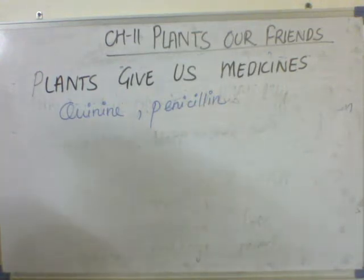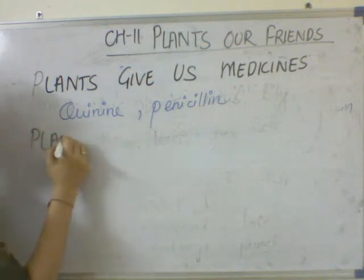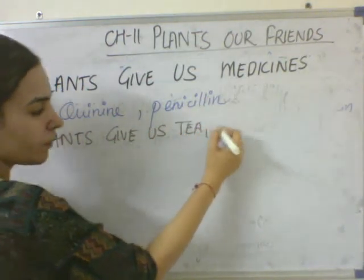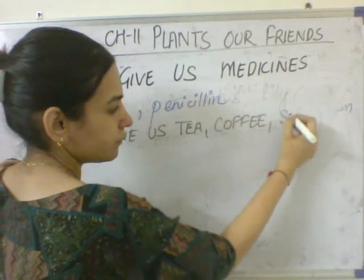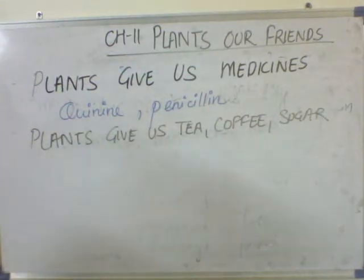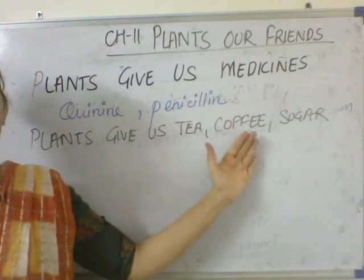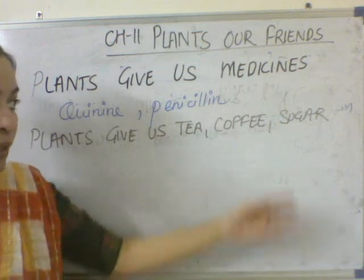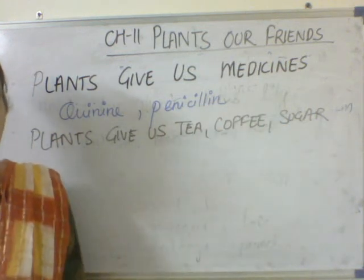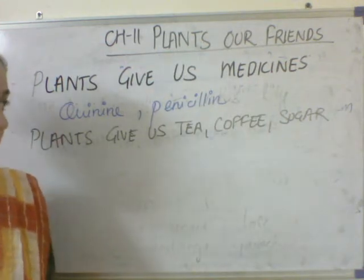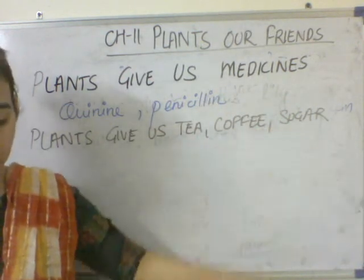Plants also give us tea, coffee, and sugar. People drink tea and coffee. Aapke parents subah morning mein tea, coffee lete hai. Hoh hume kahan se milta hai? Plants se. Sugar is used to make sweets and ice creams. Aapke mama aapke kheer bana ke deti hai, aur Diwali pe bohot saari mithaiyaan bana ke deti hai. Woh kis se banate hai? Sugar se. Sugar is chini.